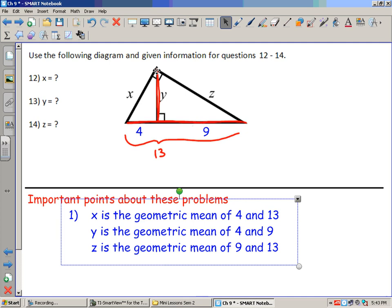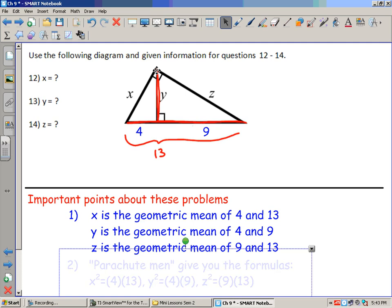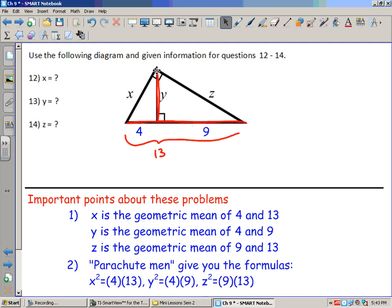Here are important things. x is the geometric mean of 4 and 13, y is the geometric mean of 4 and 9, and z is the geometric mean of 9 and 13. These are just facts that are going to be true about altitude on the hypotenuse questions. We use parachute men. Parachute men give you the formulas: x²=(4)(13), y²=(4)(9), and z²=(9)(13).